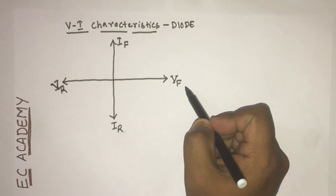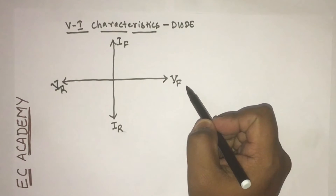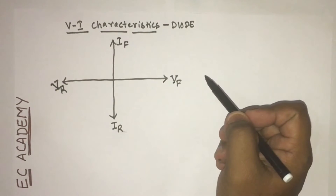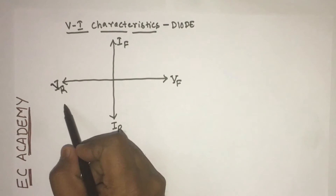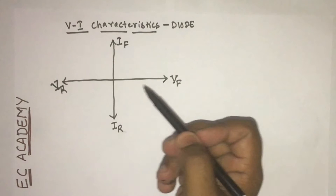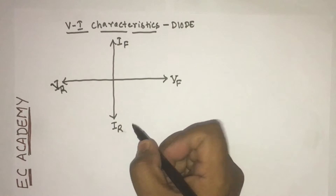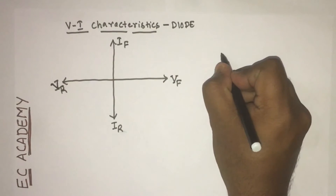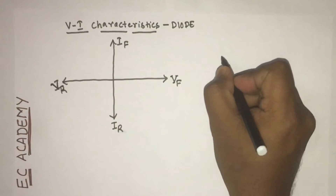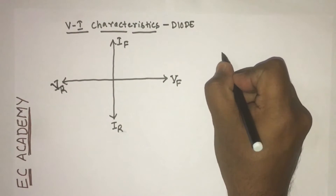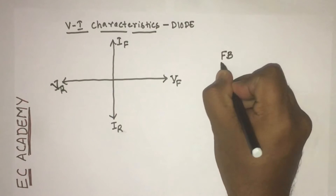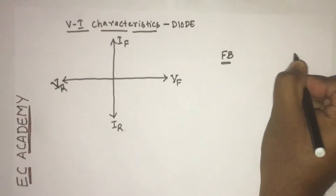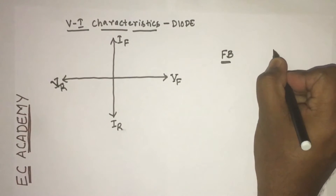Vf represents the forward voltage and forward current, and Vr represents the reverse voltage and reverse current. We know that the diode can operate in two conditions: forward bias condition and reverse bias condition.